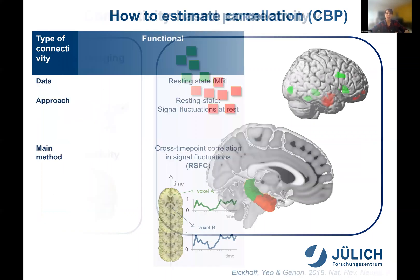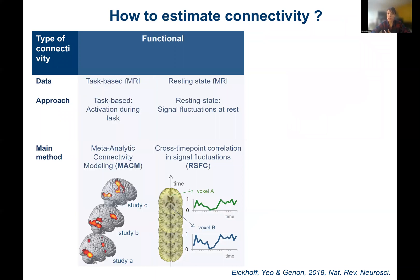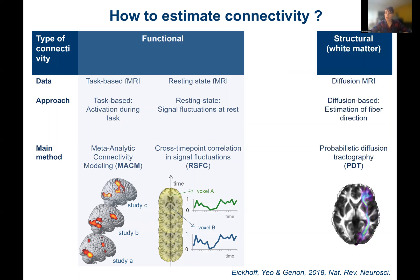There are a range of connectivity features that can be used for brain parcellation. The most popular is functional connectivity derived from resting-state data. Functional connectivity can also be derived from the meta-analytic approach, giving co-activation information about voxels across thousands of activation studies stored in databases such as BrainMap and Neurosynth. We can also use structural connectivity based on diffusion MRI.